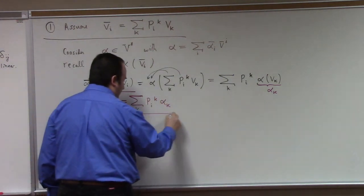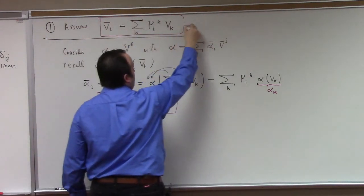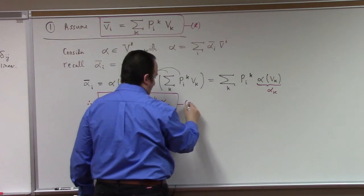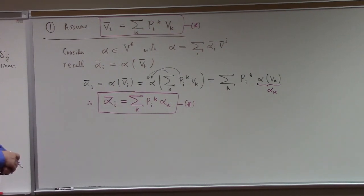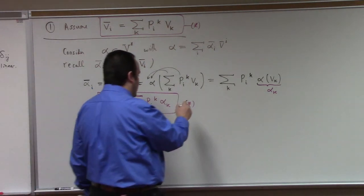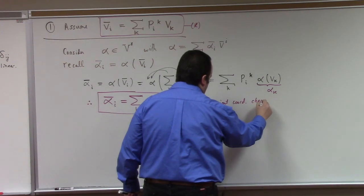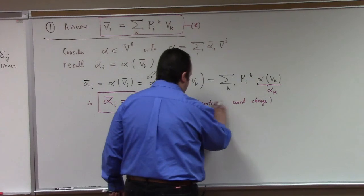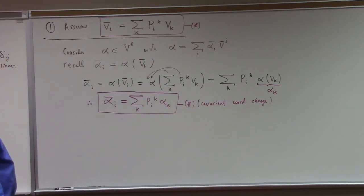Now, if you look at that coordinate change formula and compare it to the starting assumption — the same rule applies. The change from unbarred to barred, we just take the sum over the P matrix. The role of the indices on P as they relate to the basis for V or the components for the dual vector is the same. We say both of these give us what are called a contravariant coordinate change. Physicists will say covariant is the lower index.